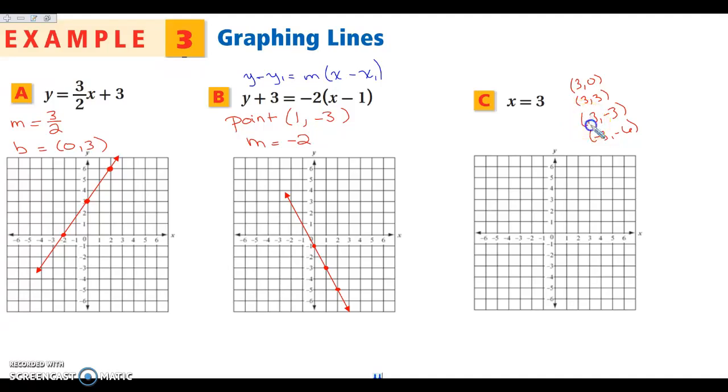I don't know why I'm putting negatives here, guys. These should be positives. Pardon me. Ignore me. This would be 3, 3. I was writing it different than what I was thinking. So all of these x values are 3.